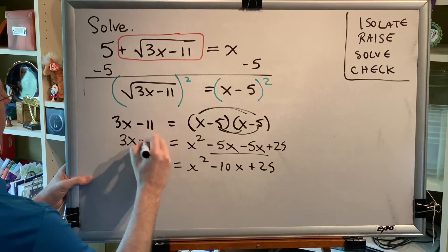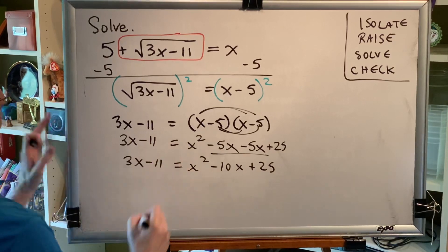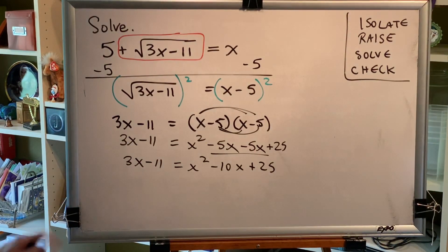Putting these like terms together, we get x squared minus 10x plus 25. Now the right side of our equation is done, but the left side has remained the same for the last two lines of algebra; we still have 3x minus 11.